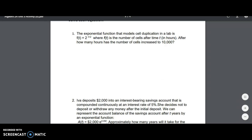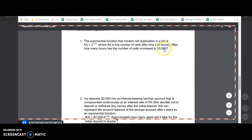After how many hours has the number of cells increased to 10,000? So we know that 10,000 is f(t), and after how many hours, we don't know that, so we're going to leave that as t. And so what we're going to do to set up our equation is 10,000 equals 2 to the power of t plus 2.